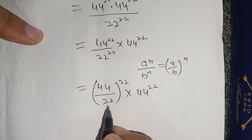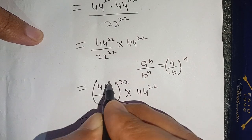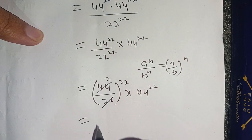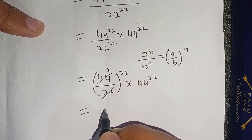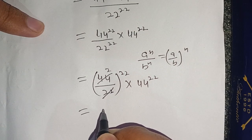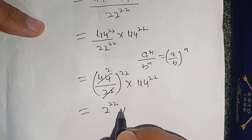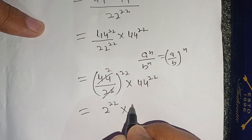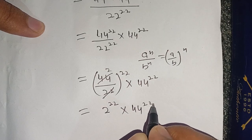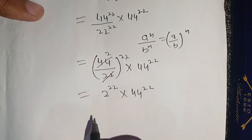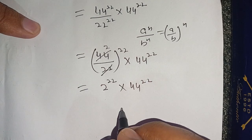Now we can cancel out: 44 divided by 22, since 22 times 2 becomes 44. Our remaining component is 2 raised to power 22 times 44 raised to power 22.